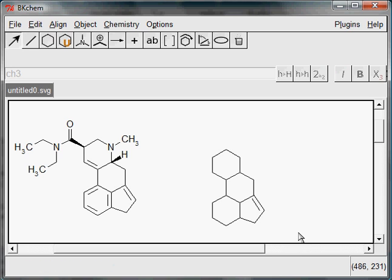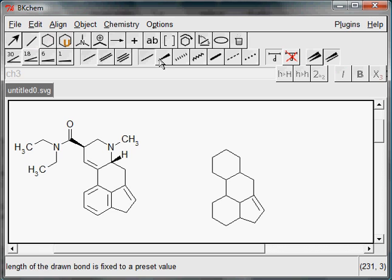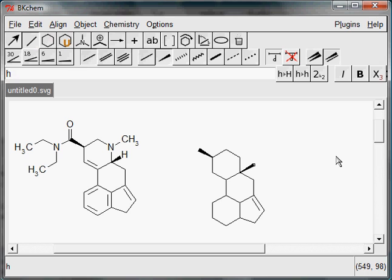Let's continue with two bonds that go behind the molecule. Select a different style and draw them. Don't forget to type hydrogen right after you draw the second one.